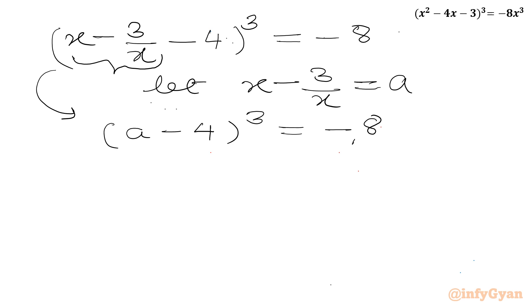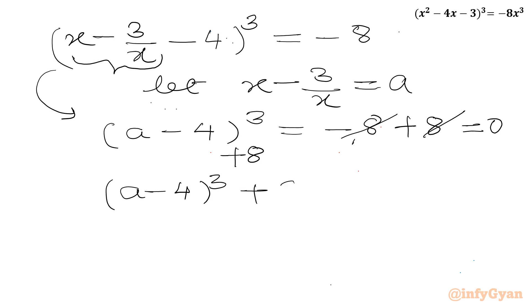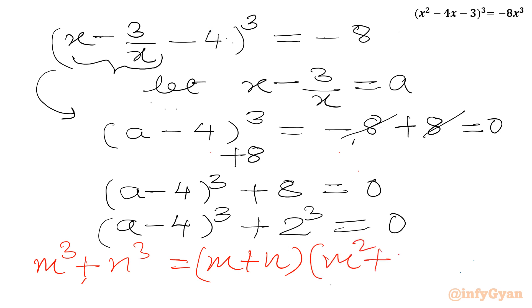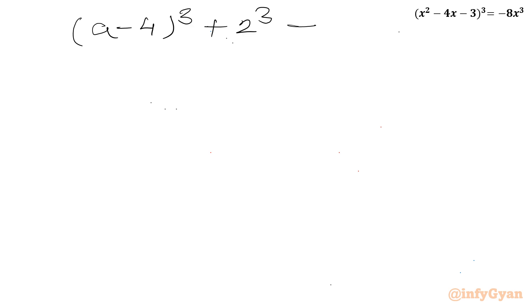I will add 8 to both sides, giving (a - 4)³ + 8 = 0, which can be written as (a - 4)³ + 2³ = 0. Now we can apply the sum of cubes formula: m³ + n³ = (m + n)(m² - mn + n²), where m = (a - 4) and n = 2.